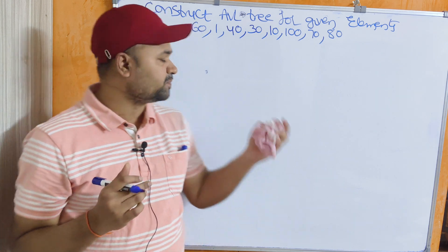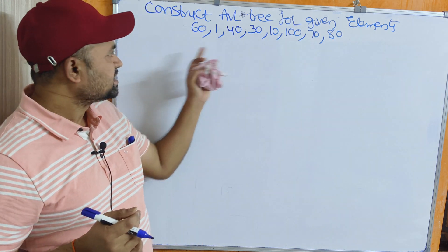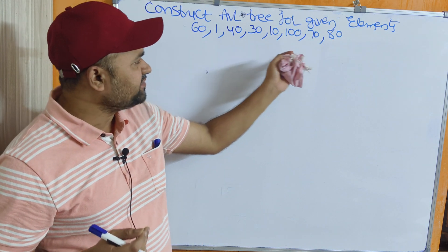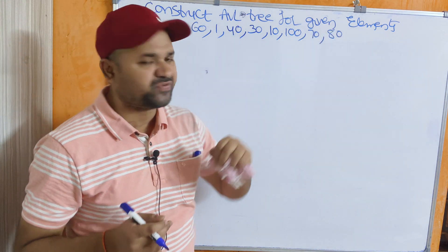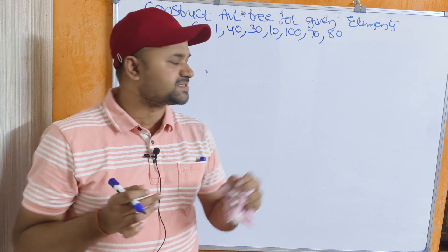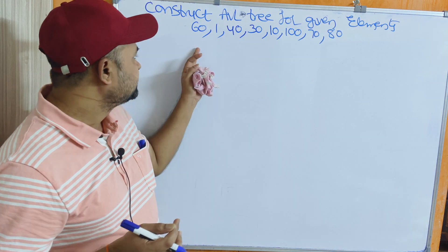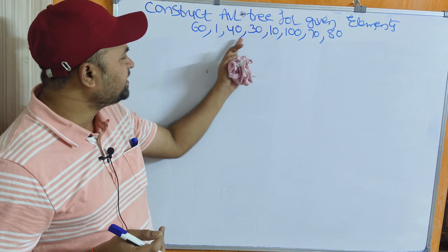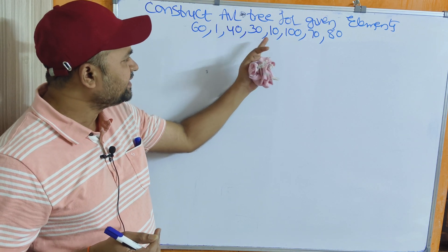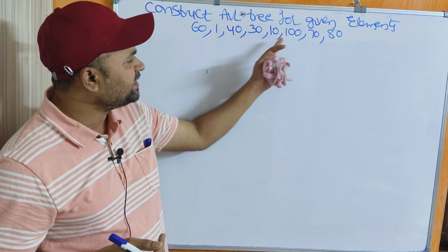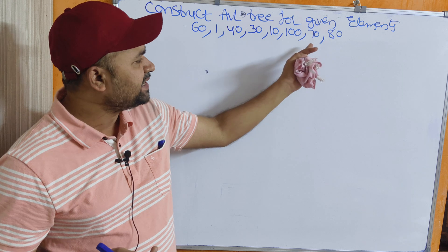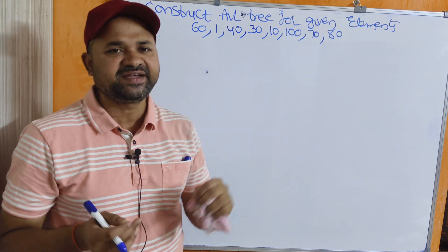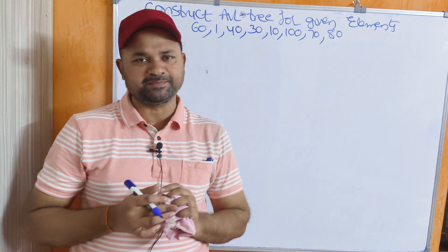Let us see this example. Construct an AVL tree for the given elements: 60, 1, 40, 30, 10, 100, 70, 80.